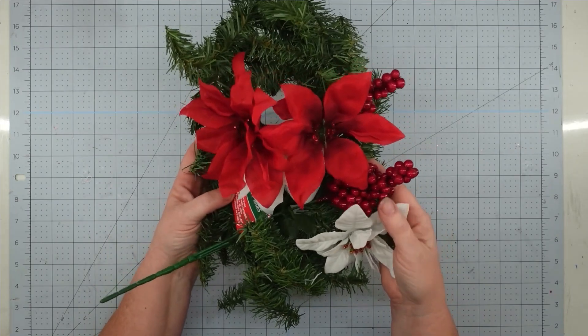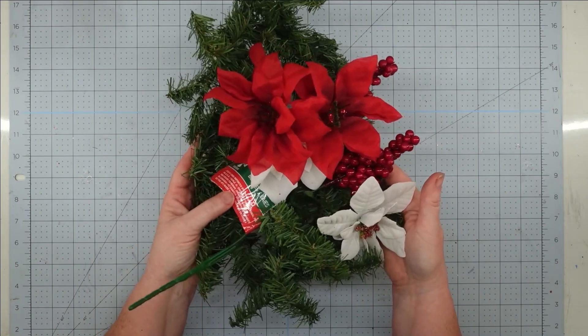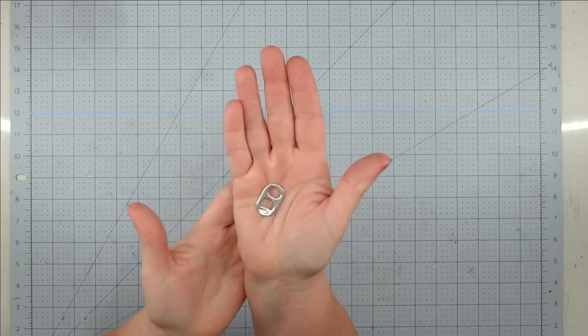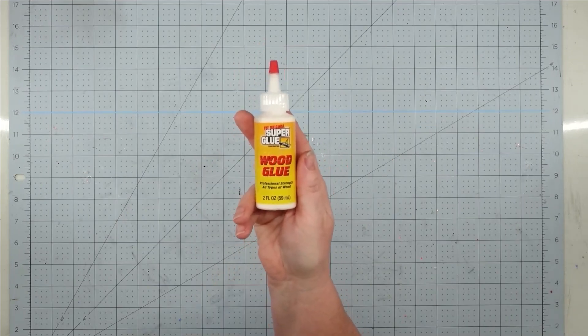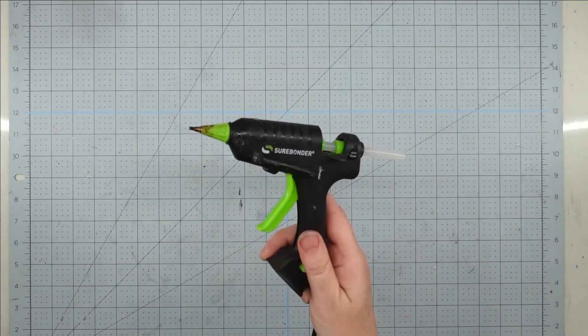These came from Dollar Tree and Walmart. A pop tab off of a soda can, some super glue, wood glue, and some Fix All adhesive from the Dollar Tree, and my glue gun and some glue sticks.